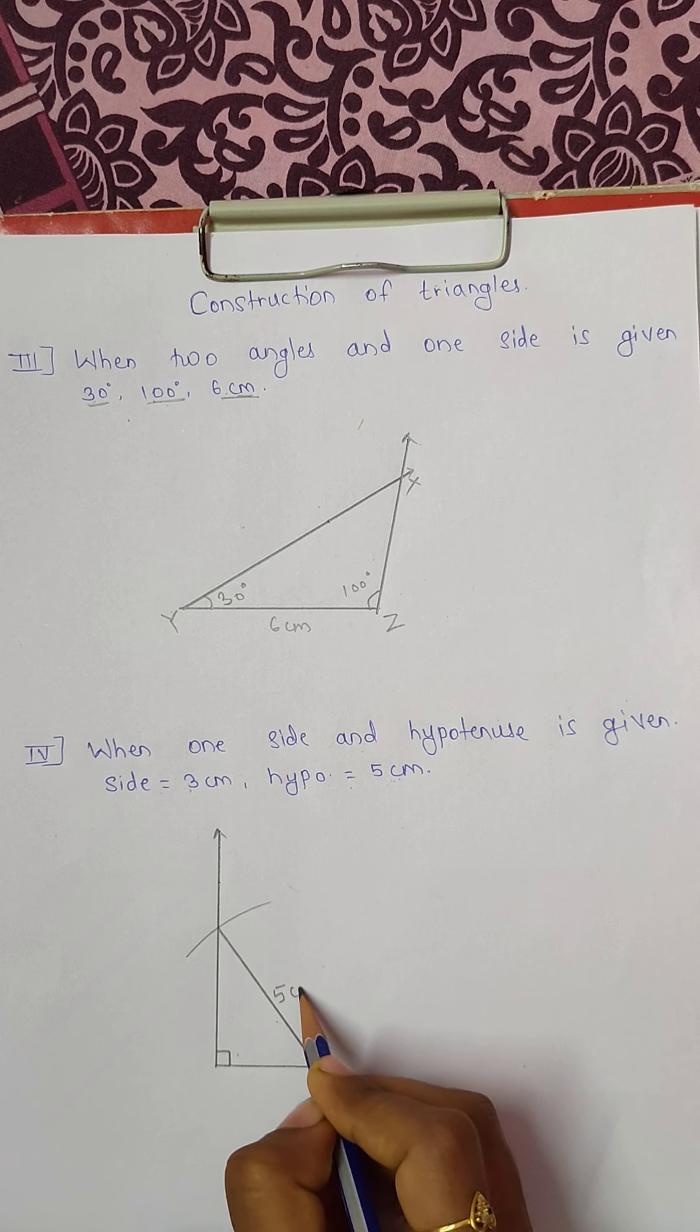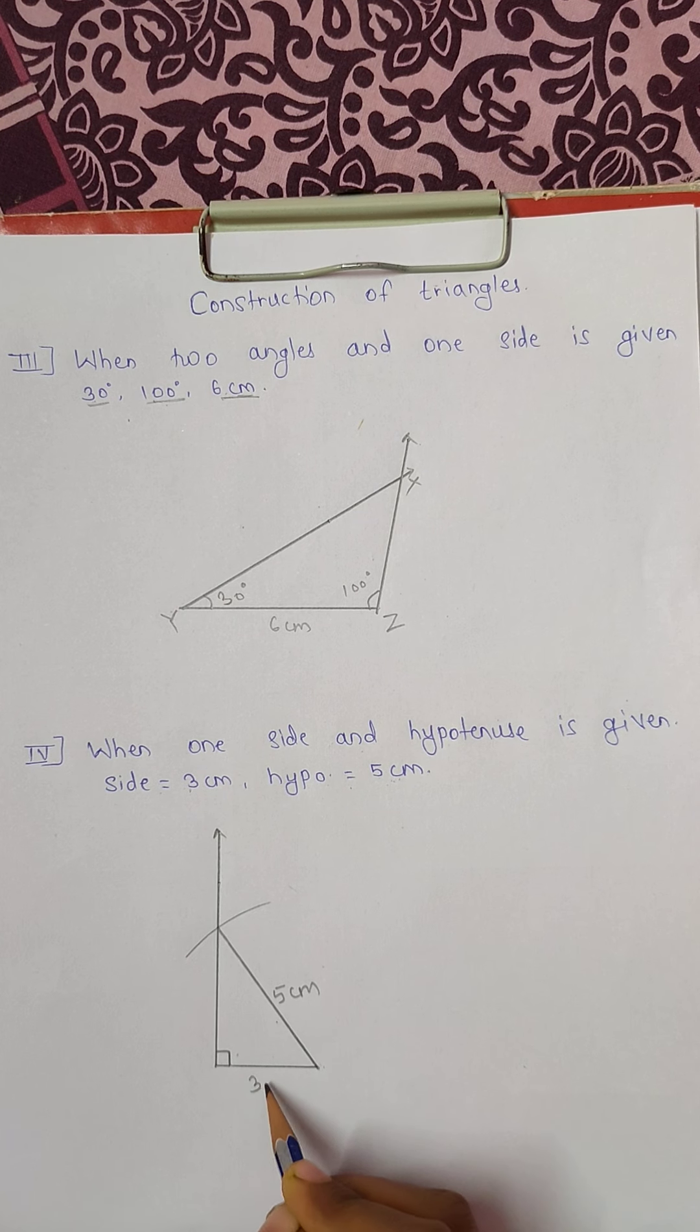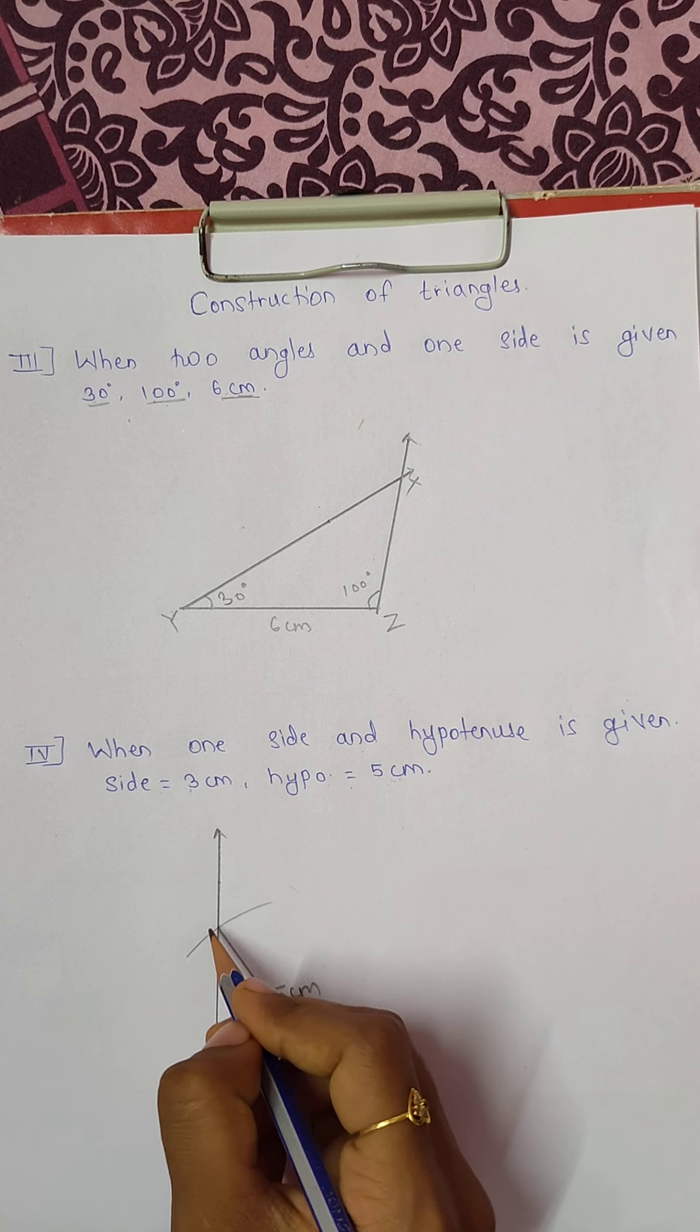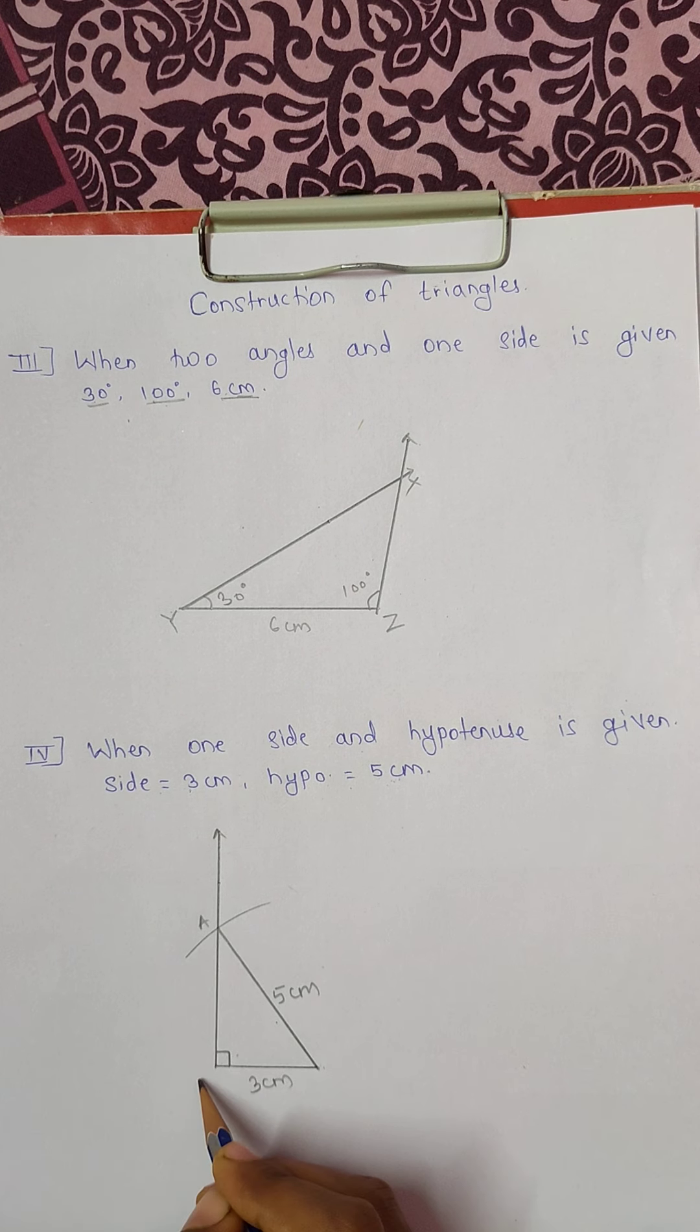So here, this hypotenuse is 5 centimeters, this is 3 centimeters and this angle is 90 degrees. Let's label it as ABC.